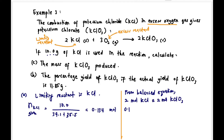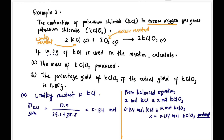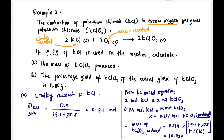If we have 0.134 mol KCl, it produces x mol KClO₃. Cross-multiplying gives x = 0.134 mol KClO₃ produced. The question asks for mass, so: mass of KClO₃ = 0.134 × molar mass of KClO₃ = 16.434 grams. That is the mass of KClO₃ produced.